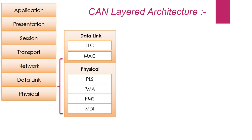The data link layer is responsible for node-to-node data transfer. It defines the protocol to establish and terminate the connection, and is also responsible for detecting and possibly correcting errors that may occur at the physical layer.